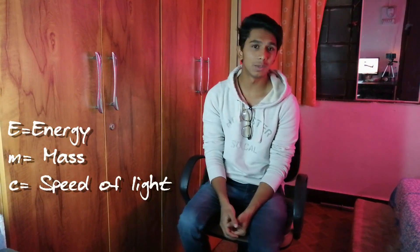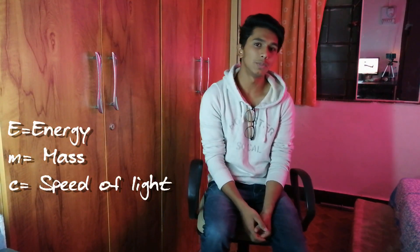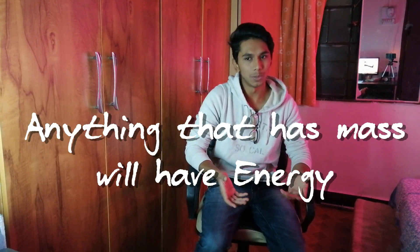Let's bring Einstein into the picture with his famous equation: E equals MC squared, where E is the energy, M is the mass, and C is the speed of light. He figured out a way to show how much energy is stored in some amount of mass at rest. With this formula, it's clear that anything that has mass will have energy. But that still doesn't solve our problem of understanding what energy truly is.